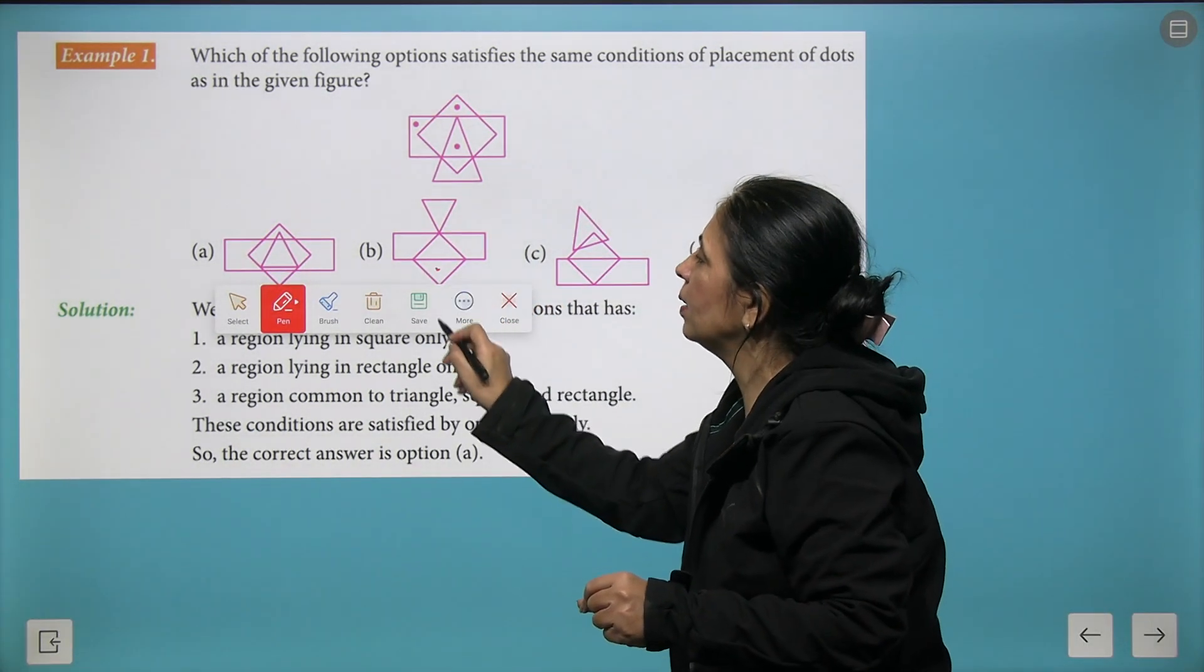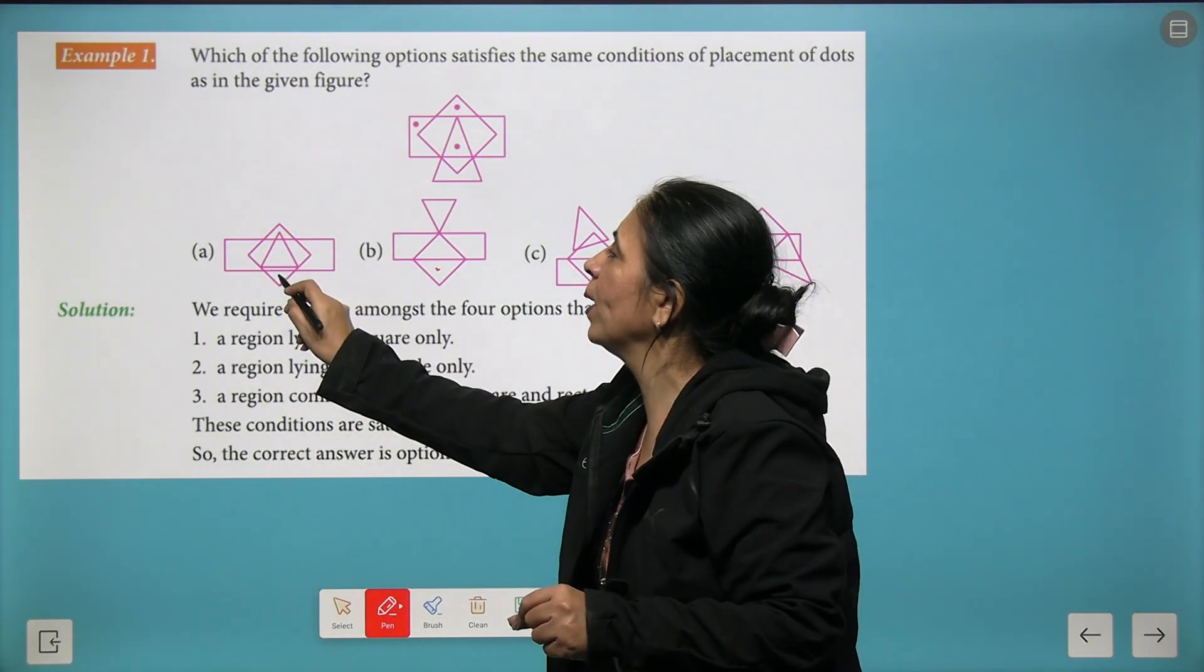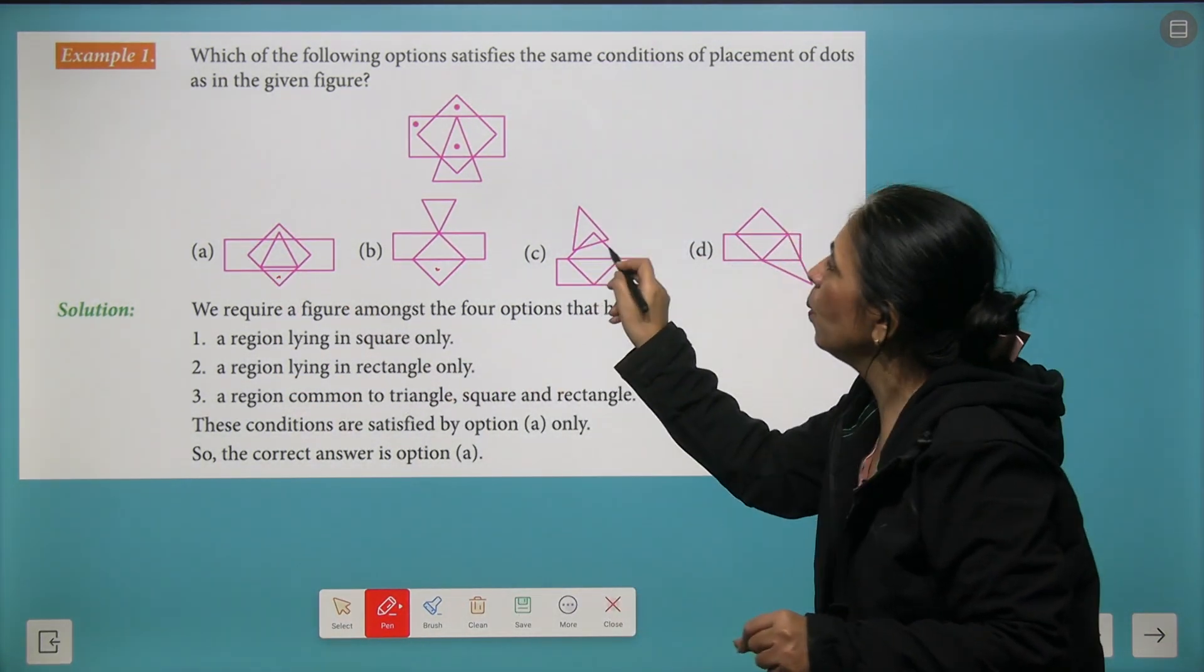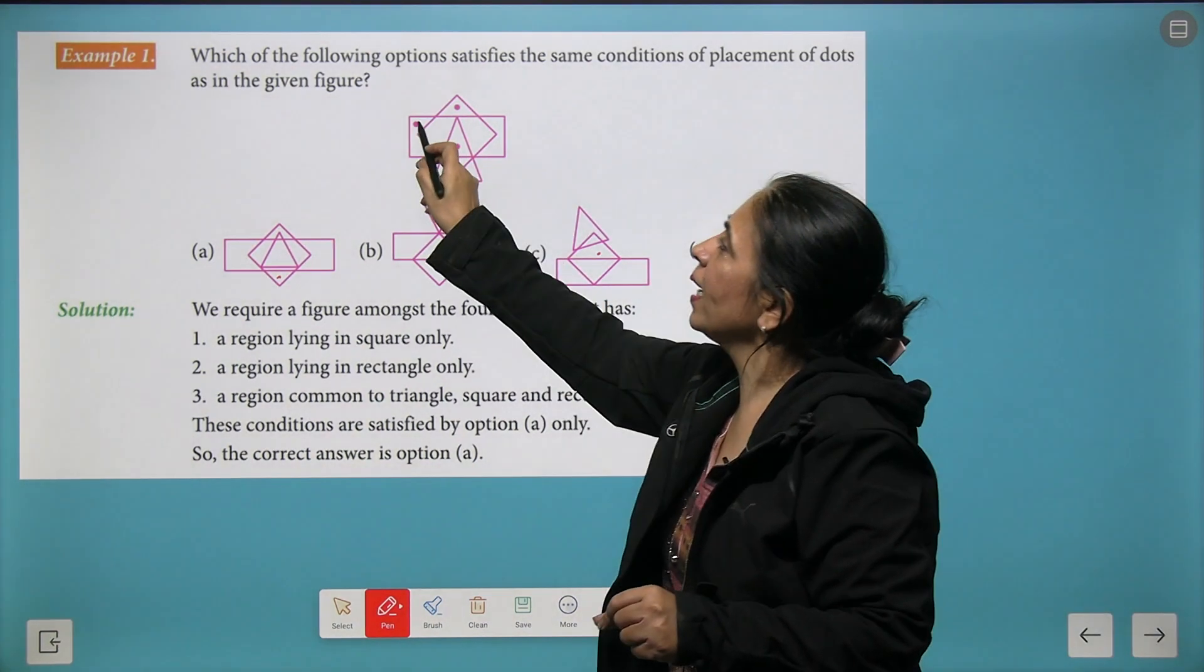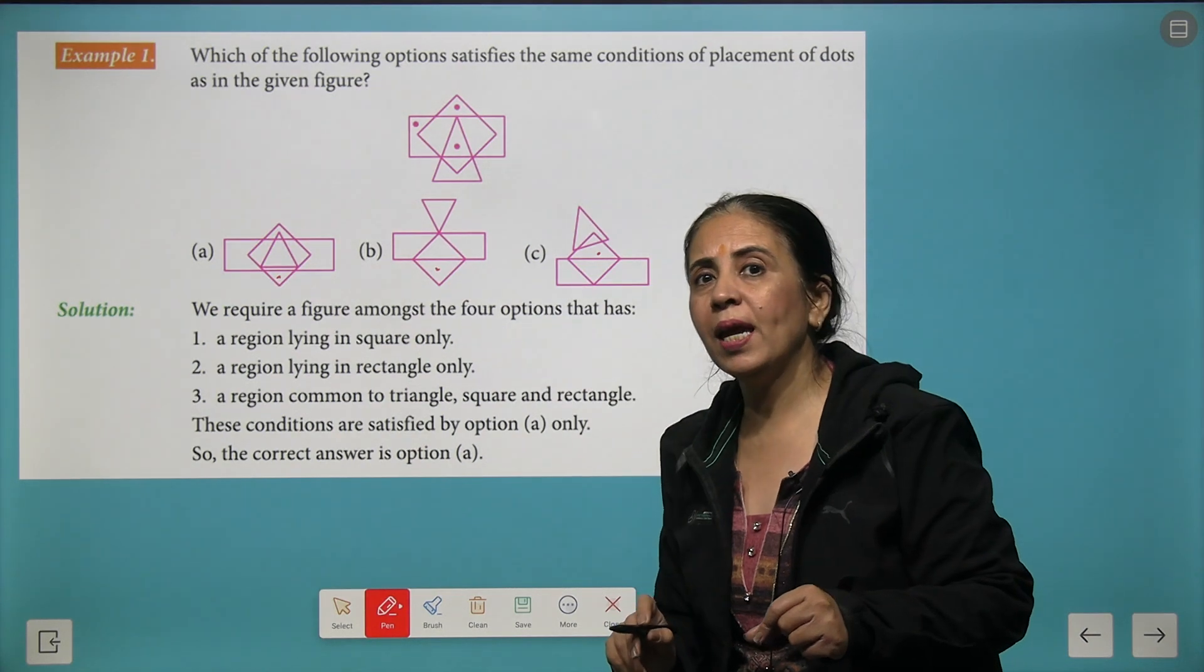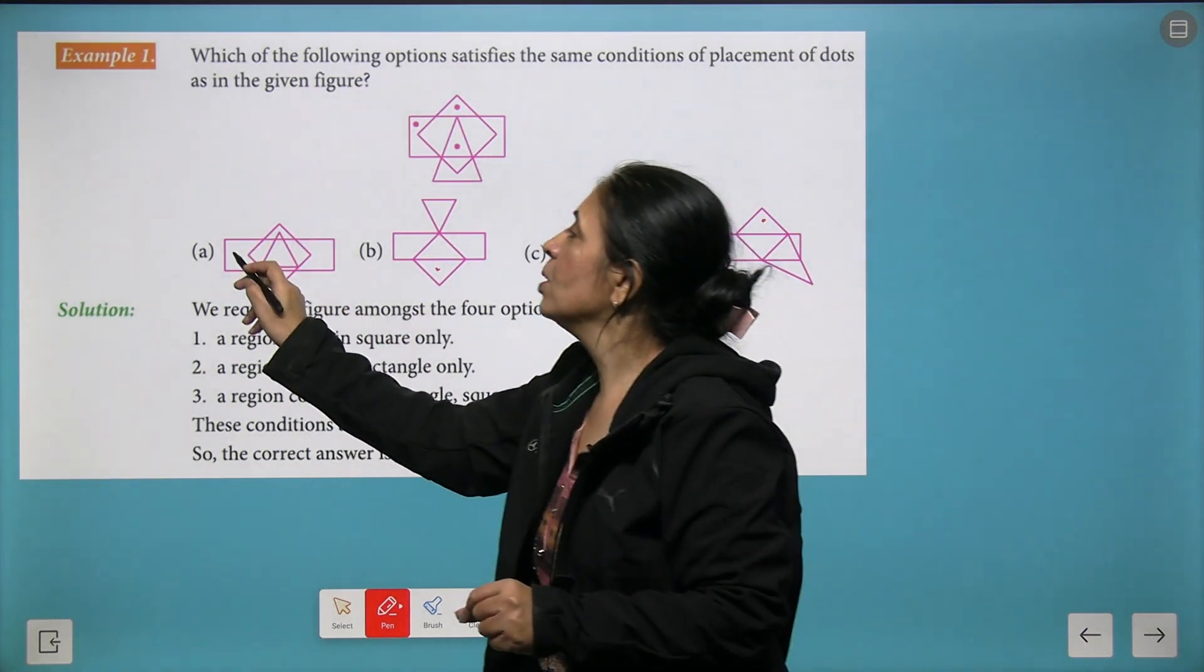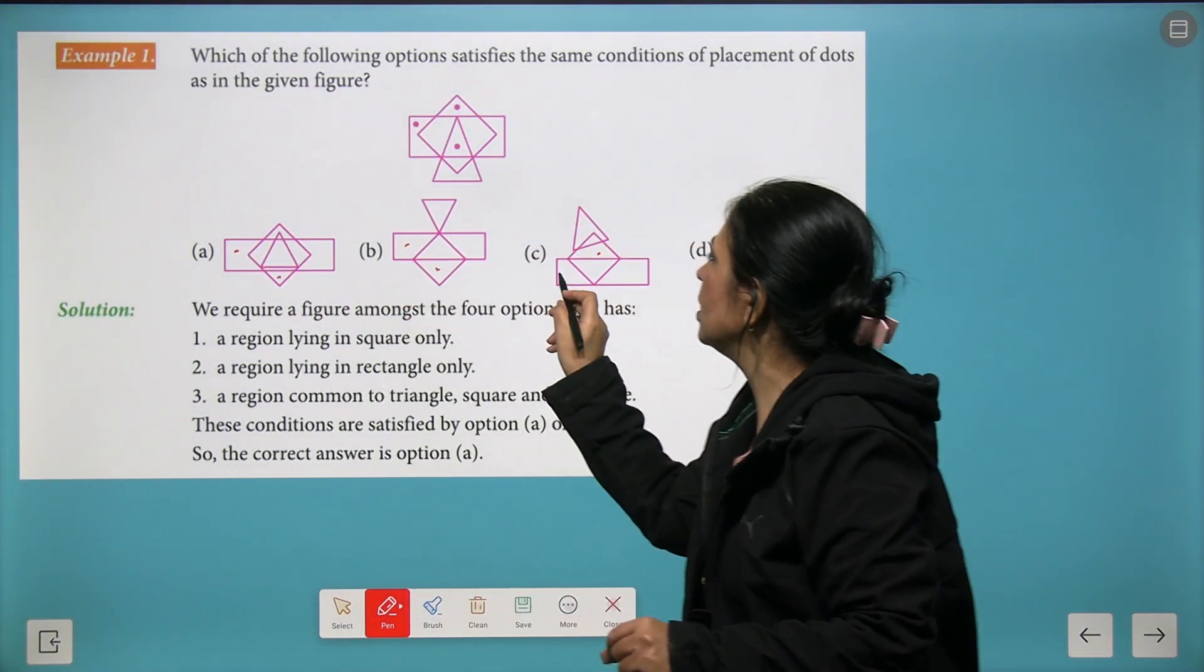So let's mark the squares. Here we have a square, here we have the square at this location, and square at this location. The second dot exists only in the rectangle, so mark it here, mark it here, mark it here, and mark it here.